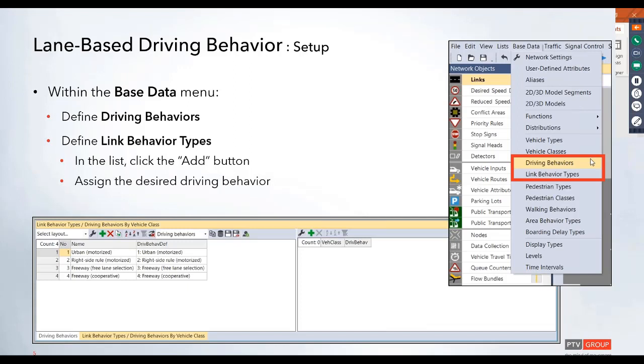As part of the setup, the first item that you're going to want to adjust is your actual driving behaviors. These will be set up within the base data menu. Click on base data and go down to driving behaviors to open up that driving behavior list.